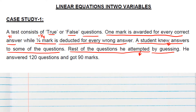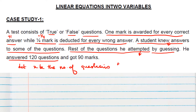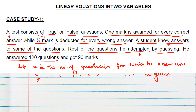He answered 120 questions total. Let x be the number of questions for which he knew the answer, and y be the number of questions for which he guessed. So total questions: x plus y equals 120. This is our first equation.